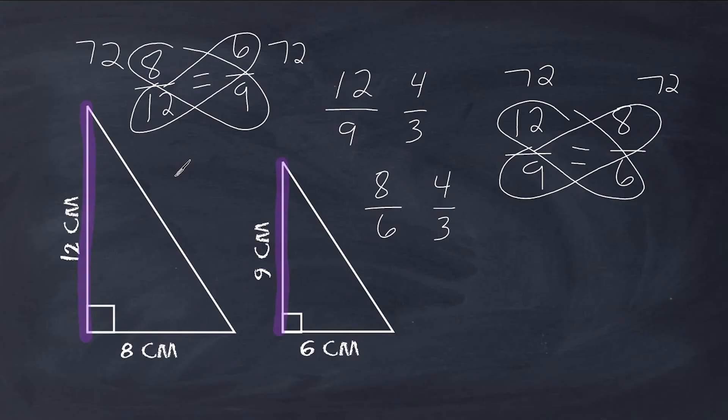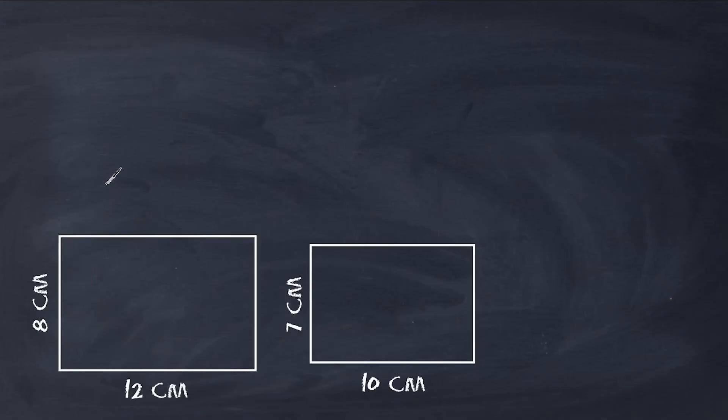Alright, let's go ahead and try another example. Okay, we're going to start by writing a ratio of corresponding sides. Because this side here, which is 8 centimeters, corresponds to this side, which is 7 centimeters. We're going to write a ratio of 8 to 7. And we want to see if that is equal to the ratio of 12 to 10.